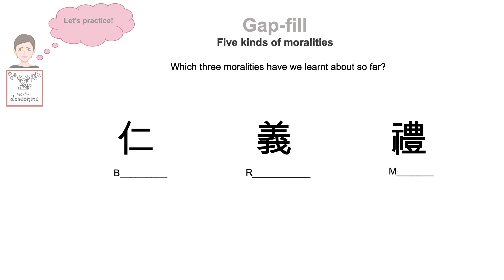This is an easy question. Can you name the three moralities I talked about just now? The first letter of each word is given to you as a hint. I will give you some time to think about the answer. You can also pause the video until you finish writing. Okay, three, two, one. Let's take a look at the first one. The first morality is... Benevolence! Correct! Good job!